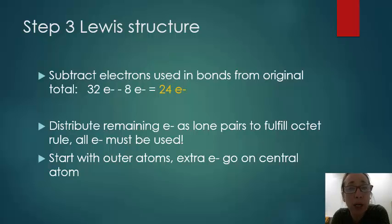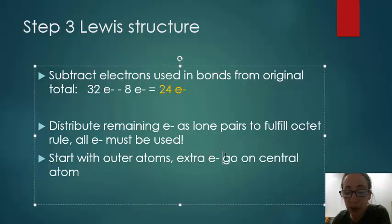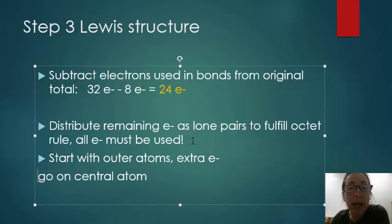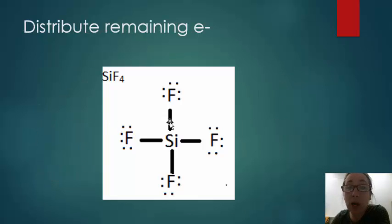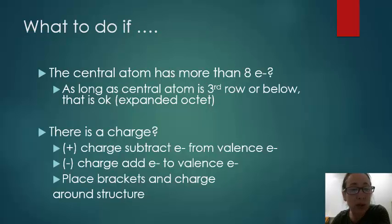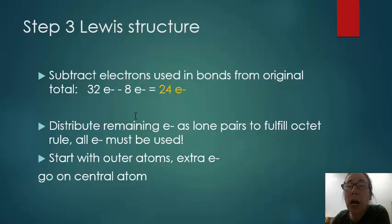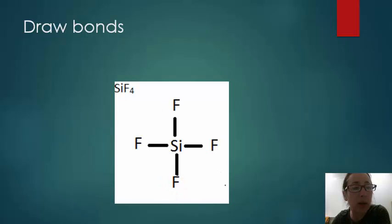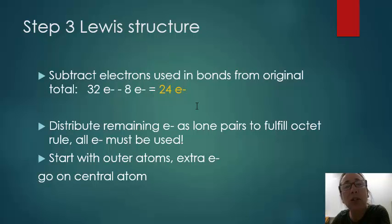In step three, we're going to take a look at accounting for our electrons. In step one, I counted 32 electrons. That's what I had to work with. And I drew four bonds. So each bond uses two electrons. So I'm going to subtract eight electrons from my total. I had 32, I drew four bonds, so I used eight. So 32 minus eight is 24. I have 24 electrons left.